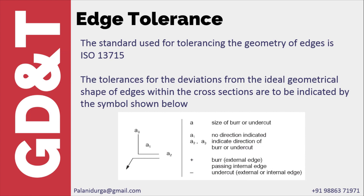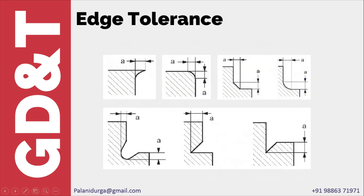These are the different possibilities. A burr can be in the horizontal direction or in the negative direction. For an external edge with material removed, it can be a chamfer — a flat surface — or a fillet radius. These are examples of internal edges. Passing means the geometry should have been a perfect line, but material is being added — it can be a flat surface, a curved surface, or it can have an undercut.